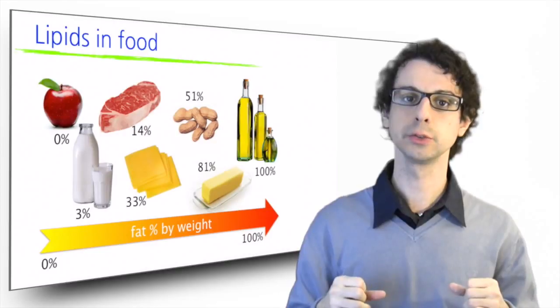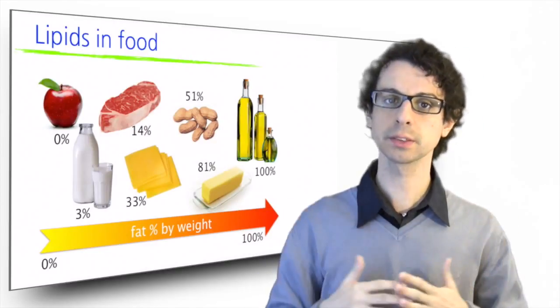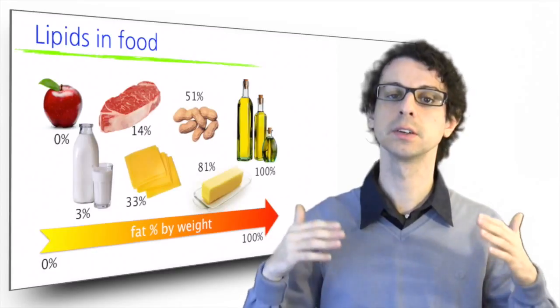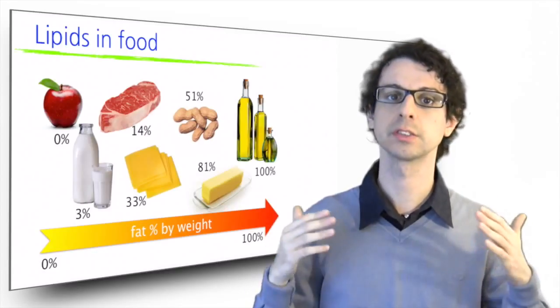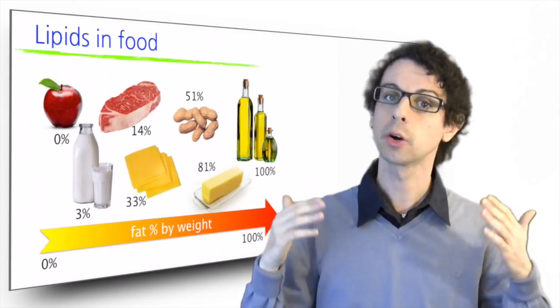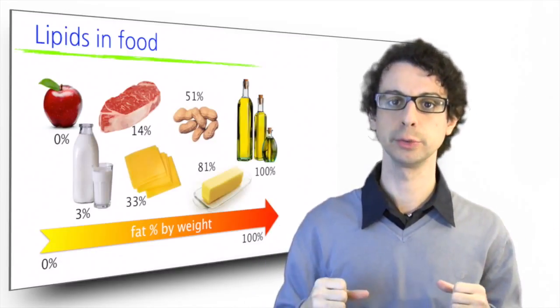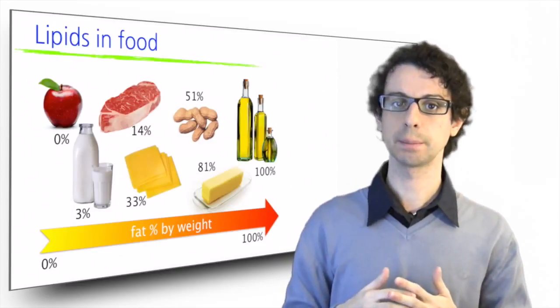So, where are lipids in food? Many times when we think of sources of lipids, the first foods that come to mind are those that contain primarily fat, such as butter, oil, mayonnaise, or the visible fat around the steak, but actually lipids are hidden in almost every food. Here we see just a few examples.